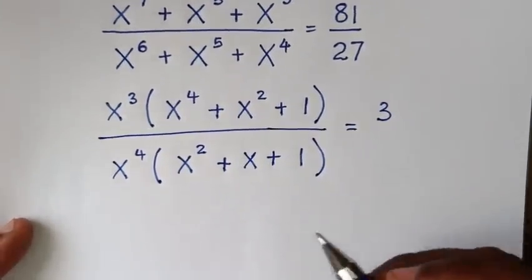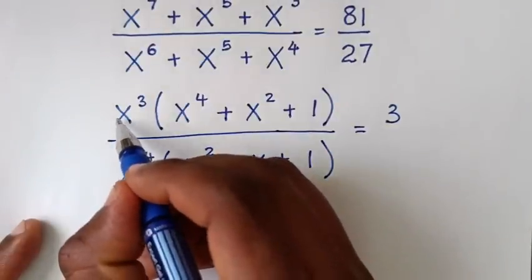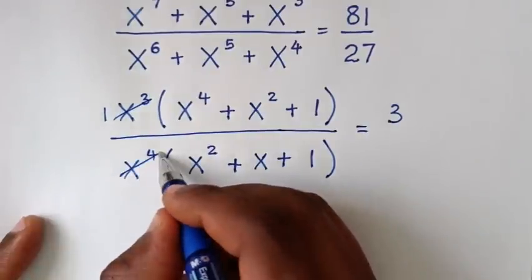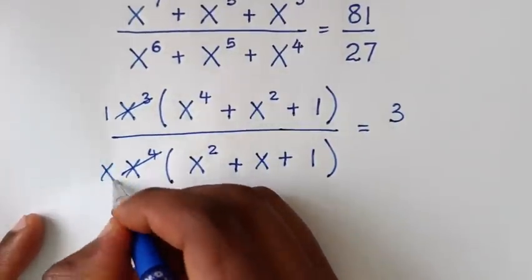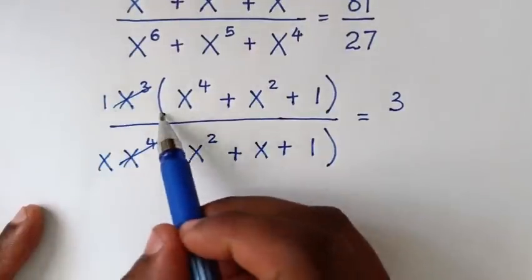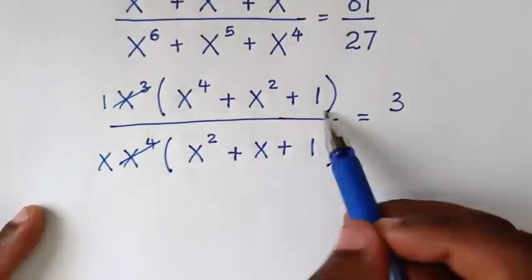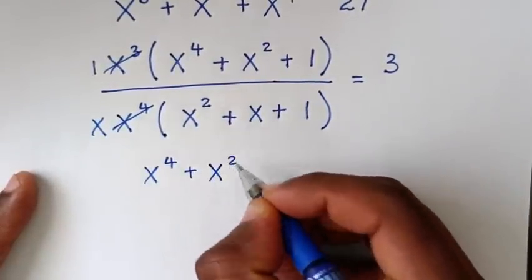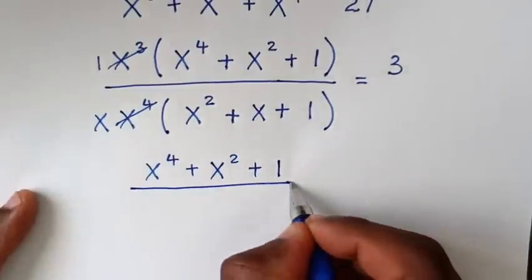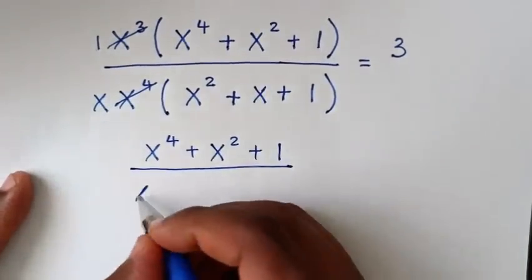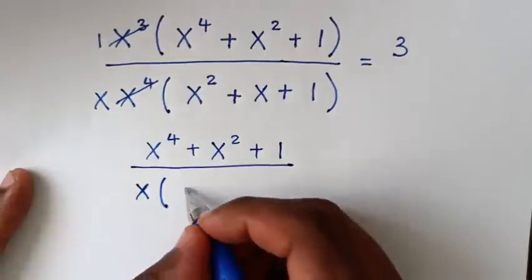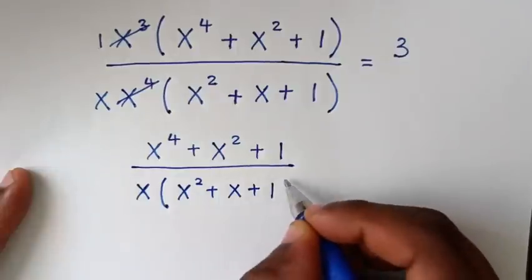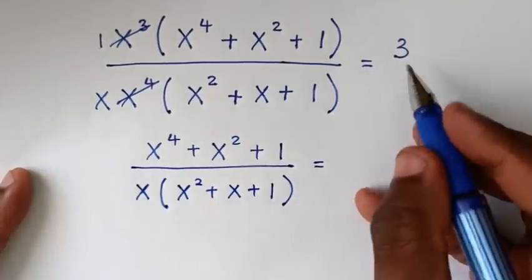In the next step, we simplify: x³ divided by x³ is 1, and x⁴ divided by x³ is x. So the numerator becomes 1 times (x⁴ + x² + 1), and the denominator becomes x times (x² + x + 1), equal to 3.